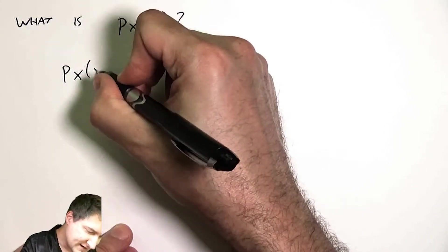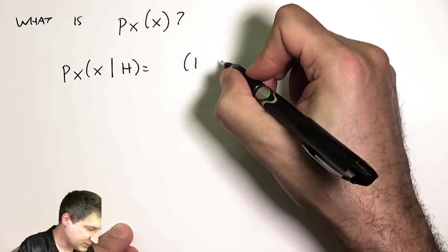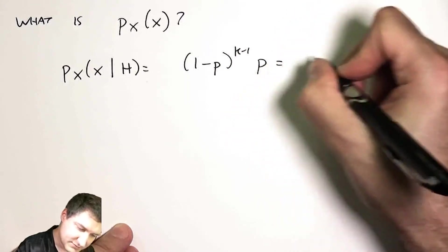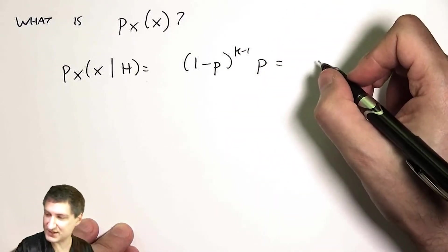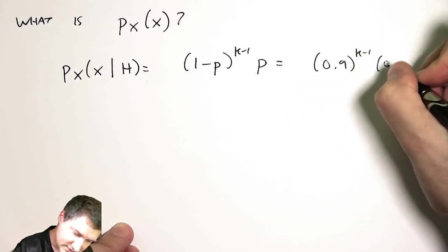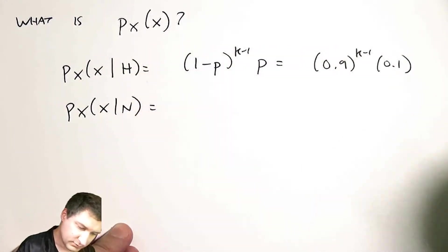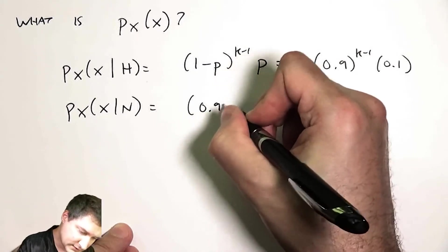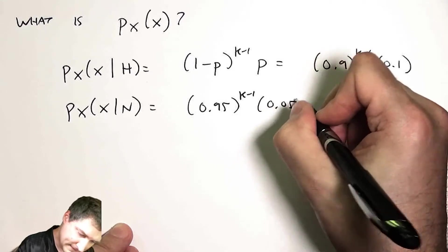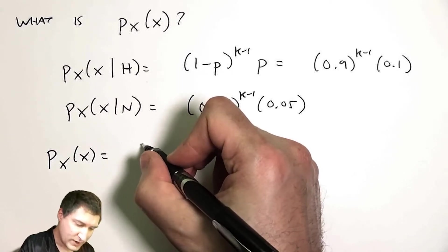Well, I know that the probability of X given H is geometric with P of 0.1. So that means I have 0.9 to the K minus 1 times 0.1. The probability of X given normal blood pressure, the PMF there was a little bit different.